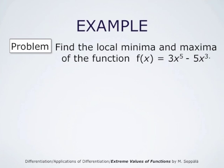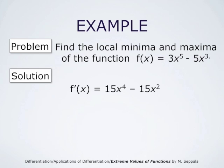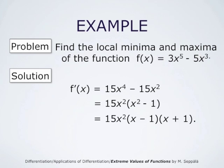In this example, we have to find the local minimum and maximum of the function 3x to the power of 5 minus 5x cubed. The derivative of this function f is 15x to the fourth minus 15x squared. This derivative factorizes as 15x squared times (x squared minus 1), which further factorizes as 15x squared times (x minus 1) times (x plus 1). So this derivative takes the value 0 if x is negative 1, 0, or 1.